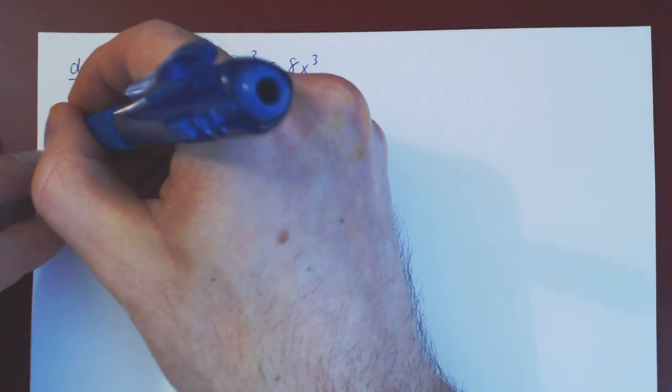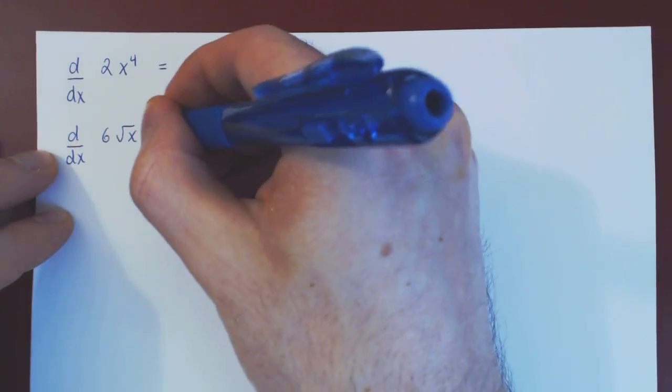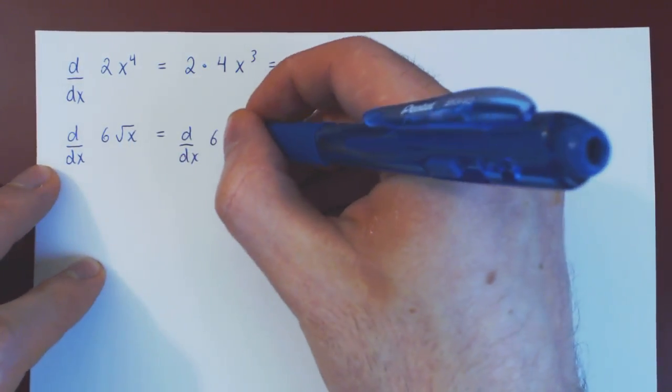If we had the derivative with respect to x of 6 root of x, again we wish to use the power rule, so we replace the square root by an exponent of 1 half.